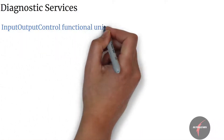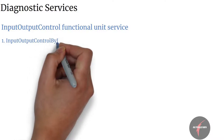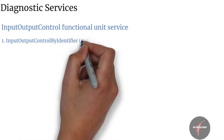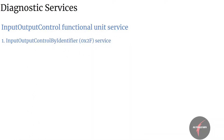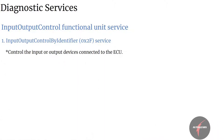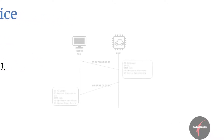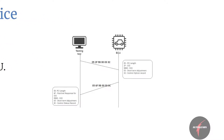Next, we have a look into the input-output control functional unit service, which comprises of input-output control by identifier service. This service would provide ways to control the input or output device connected to the ECU, and is used to diagnose different input and output devices connected to the ECU.